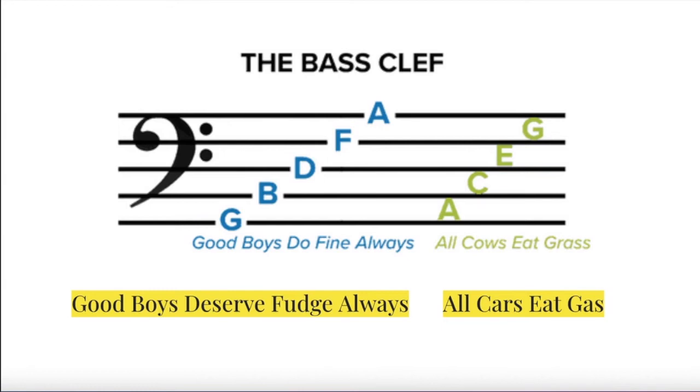The lowest space on the bass clef is A. Try to memorize the order of the spaces in ascending order with the mnemonic device, All Cows Eat Grass, or All Cars Eat Gas.